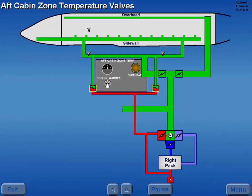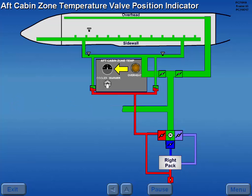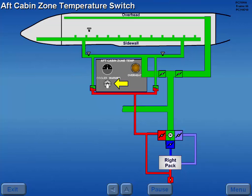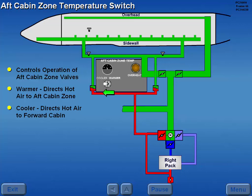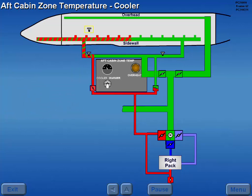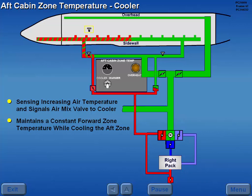Two valves in the sidewall air distribution ducting direct hot air from the right pack to either the forward or aft cabin sidewall ducts. An aft cabin zone temperature valve position indicator displays the position of the two aft cabin zone valves. The aft cabin zone temperature switch controls the operation of the aft cabin zone temperature valves. Holding the switch to warmer opens the aft valve, directing hot air to the aft zone, which warms the aft cabin. Holding the switch to cooler opens the forward valve, directing hot air to the forward cabin. The passenger cabin temperature sensor senses the increasing air temperature in the forward cabin and signals the air mix valve to a cooler setting, maintaining a constant forward zone temperature while cooling the aft zone.